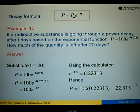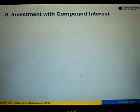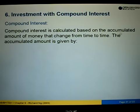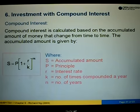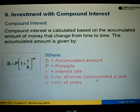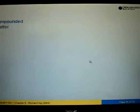Next we look at another example: investment with compound interest. Compound interest is calculated based on the accumulated amount of money that changes over time. The formula is given by S equals P times (1 plus r over k) to the power nk, where S is the accumulated amount, P is the principal amount, r is the interest rate, k represents the number of times the interest is compounded per year, and n represents the number of years.